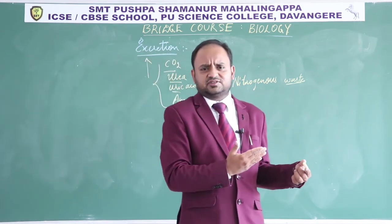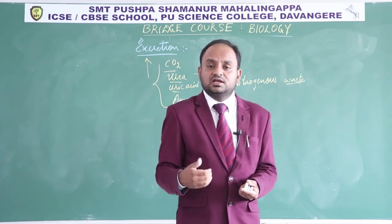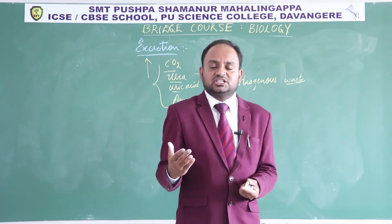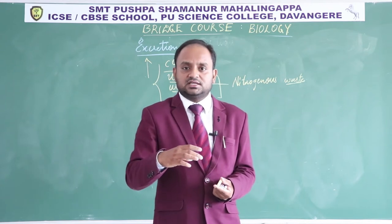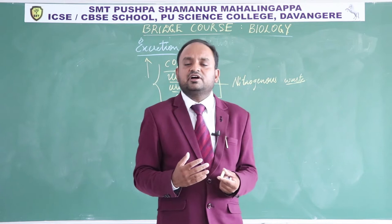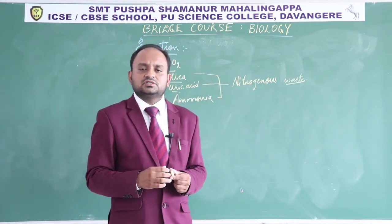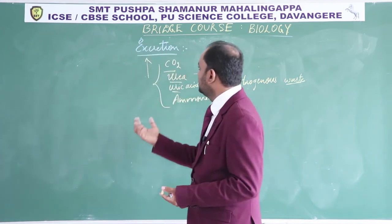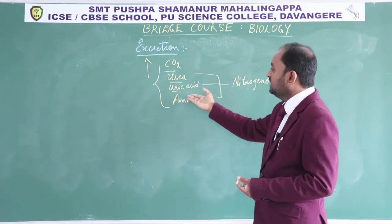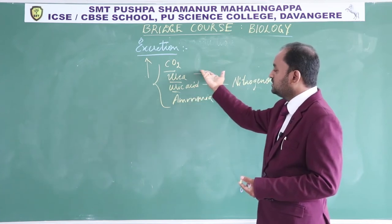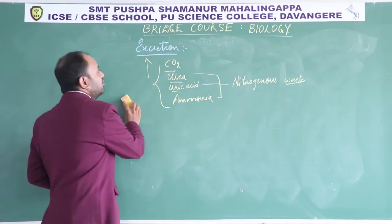In your PU classes you will deal with excretion separately — how plants show excretion and how the animal system shows excretion, starting from Porifera with cellular-level organization, through Coelenterata with tissue-level organization, up to organ system-level organization. As organism complexity increases, more improved excretory systems develop. For now, in the bridge course, we cover the definition of excretion, why it is necessary, what is excreted, and the consequences of accumulation.